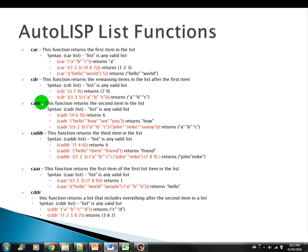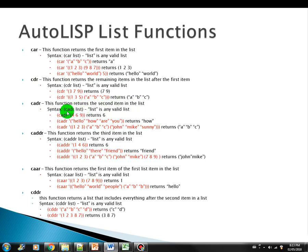The third function is CADR. This function returns the second item in the list — only the second item. Unlike CDR which returns everything after the first item, CADR just returns the second item. So in this case, we have a list of integers four, six, and nine. We issue the CADR command and it gives us six, the second element.